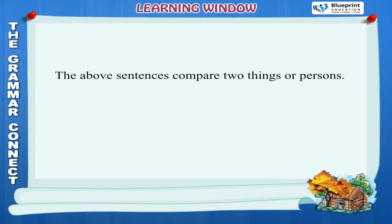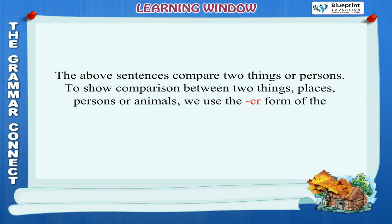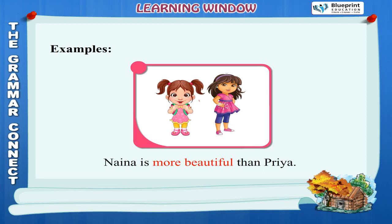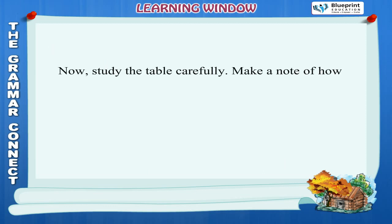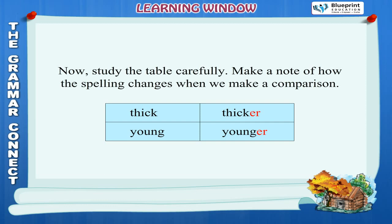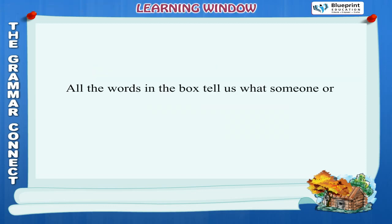Weather: Chilly wind, sunny day, bright morning. Texture or special quality: Dry skin, lukewarm water, soft cloth. The above sentences compare two things or persons. To show comparison between two things, places, persons or animals, we use the ER form of the describing word, or sometimes 'more', and we also use 'than'. Examples: Shashi is younger than Nishant. Nena is more beautiful than Priya. Note how the spelling changes when we make a comparison: Thick→Thicker, Young→Younger, Heavy→Heavier, Tasty→Tastier, Soft→Softer, Light→Lighter.